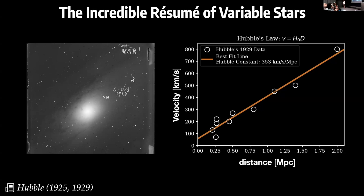But Hubble didn't stop there. He continued to apply this technique of measuring distances to more galaxies. What he found was remarkable: the galaxies more distant from us are the ones receding from us faster. He discovered the expanding universe, and he applied the original technique of machine learning — ordinary linear regression — to work out the relation between these two variables. With his original data he got a Hubble constant of about 350. The slope has units of one over time, so he measured the age of the universe — at that time about 3 billion years. Using modern measurements of variable stars, we find 13.8 billion years.